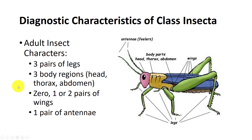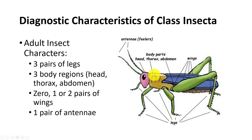First thing you need to figure out is, is it an insect? You can do that by looking at these generalized characteristics. Keep in mind that this is for adult insects. Adult insects will have three pairs of legs, which are all attached to the thorax. Three body regions: the head, thorax, and abdomen. They can have one, zero, or two pairs of wings.